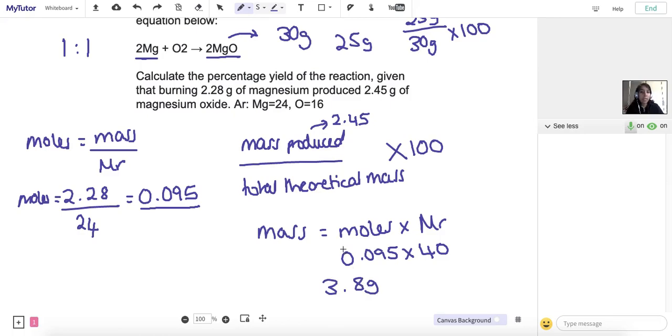So that means 3.8 grams is what is theoretically possible, but in the reaction that was done here, we only produced 2.45. So the percentage yield is 2.45 divided by 3.8 times 100. If you put that into your calculator, you'll get an answer to three significant figures of 64.5%. And that's the answer.